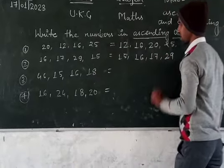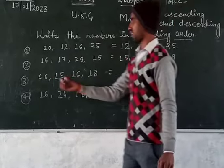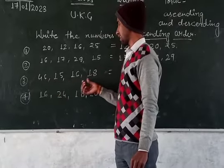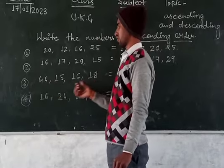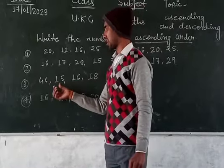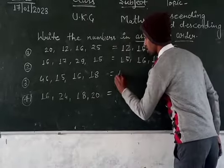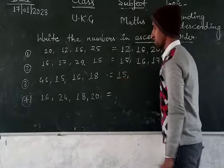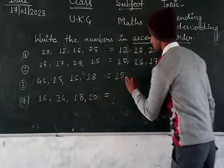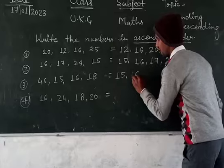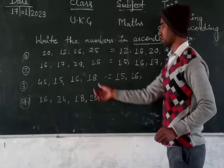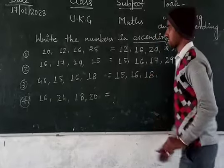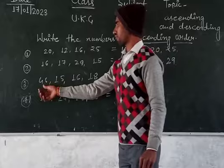Next question. The numbers are 46, 15, 16, and 18. The smallest number is 15. Then the next biggest number is 16, then 18, then 46.